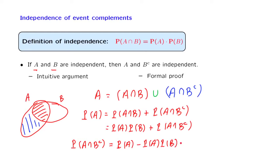We factor out the term probability of A. And we are left with 1 minus probability of B. And then we recognize that 1 minus the probability of B is the same as the probability of B complement.